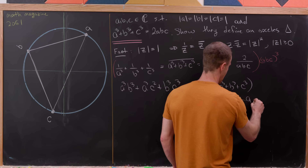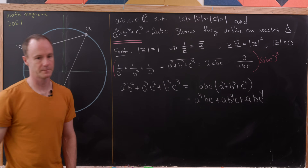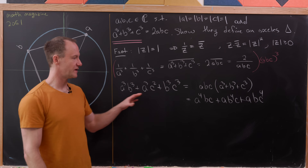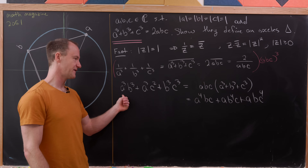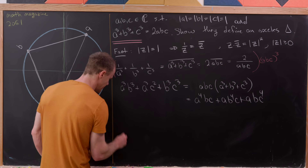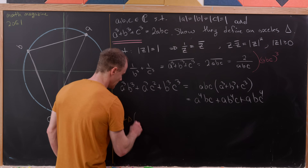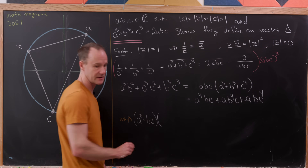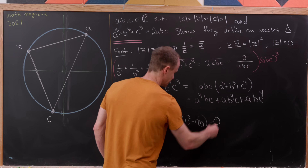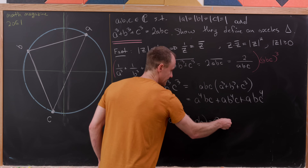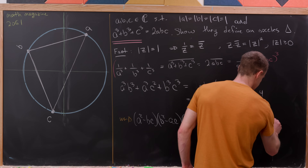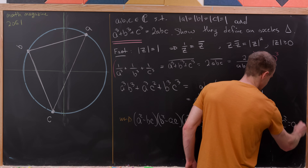Multiplying out the right-hand side gives a⁴bc + ab⁴c + abc⁴. The next part is pretty tricky and not super obvious, but we move the left-hand side to the right and factor, giving us (a² - bc)(b² - ac)(c² - ab) = 0. This gives us three possibilities: a² = bc, b² = ac, or c² = ab.